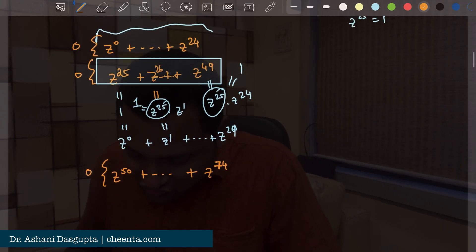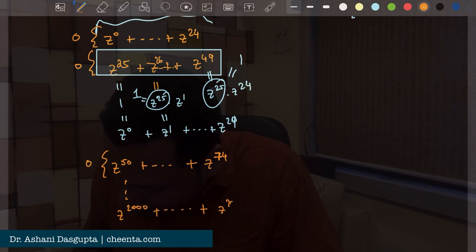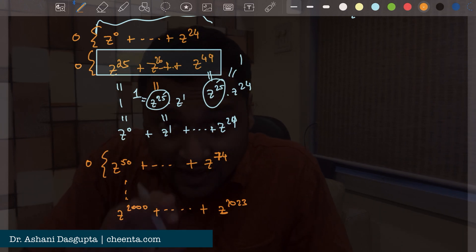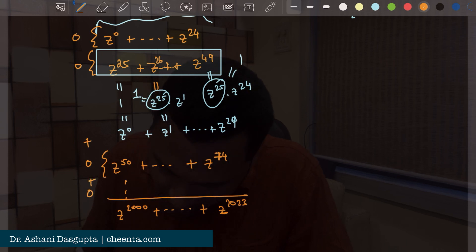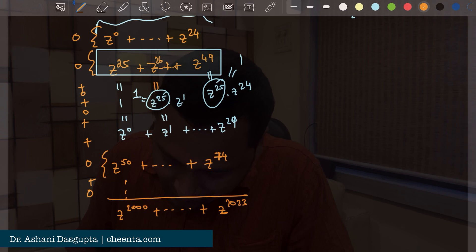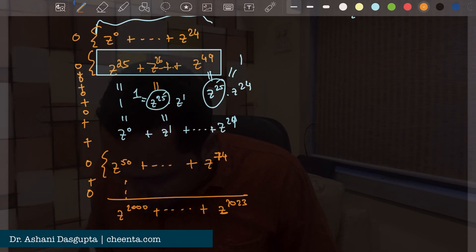And you can easily check that the last one in this list will be z to the power 2000 up to z to the power 2023. And we don't know the value of that but everything before that would add up to 0. These are just bunch of 0s. So we are only left out with this part.